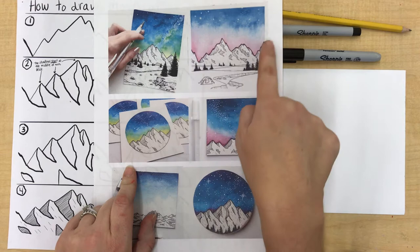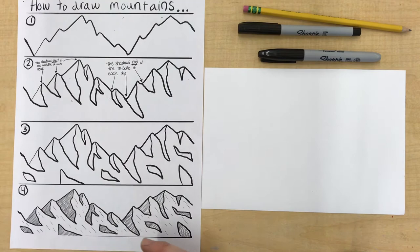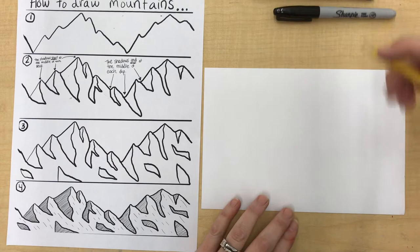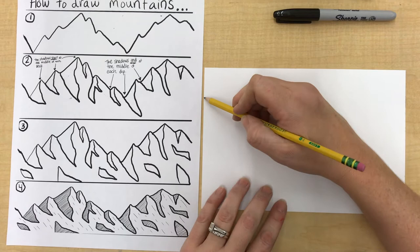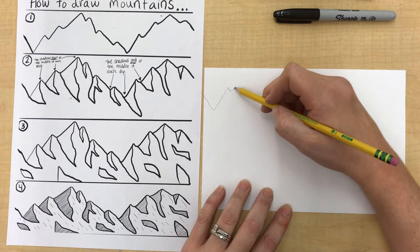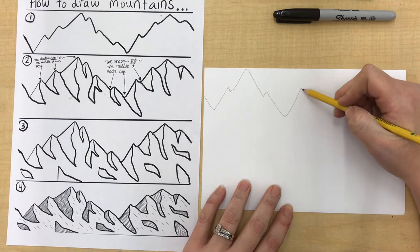So your first job for your artwork today is to create that mountain line, and you need to be very zigzaggy about it. So somewhere closer to the top of your paper, because we are going to put some stuff down below. You want to maybe come down and then go up and then down a little, and then maybe up and down. I'm just going up and down, not always going straight across, but maybe some shorter lines, some longer.